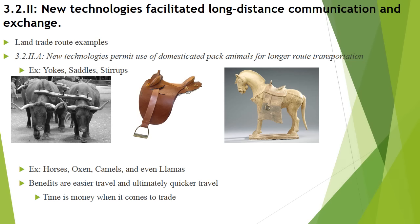These technologies are used across the eastern hemisphere to ride domesticated animals like horses, oxen, and camels. In the Americas there are a few minor examples of llamas having saddles, but not as extensive as in the east. The benefits are easier and quicker travel — if I can ride more comfortably on a horse because of a saddle and stirrups, I can ride longer distances or longer in the day, getting further along my trade route. If oxen do the heavy lifting, I can go further distances. Time is money when it comes to trade.